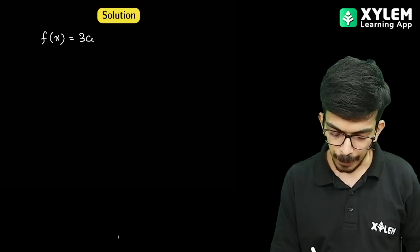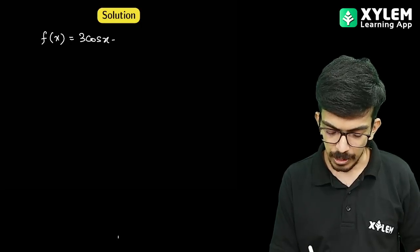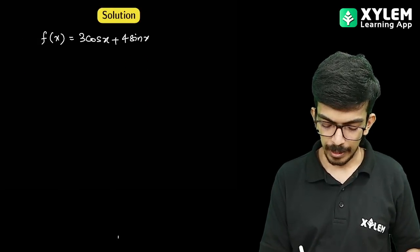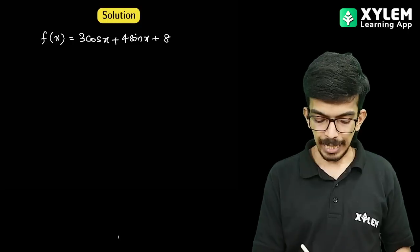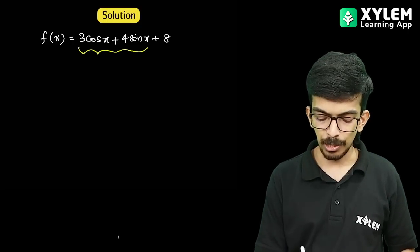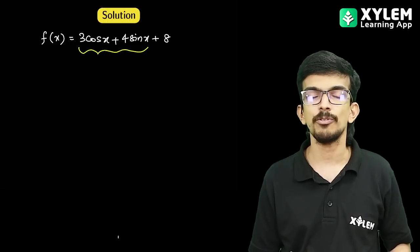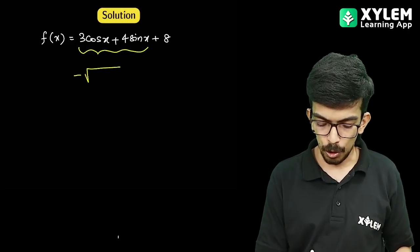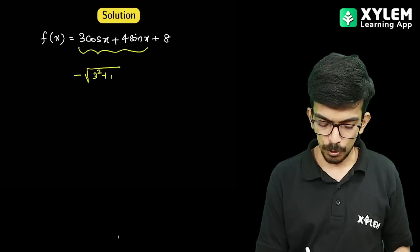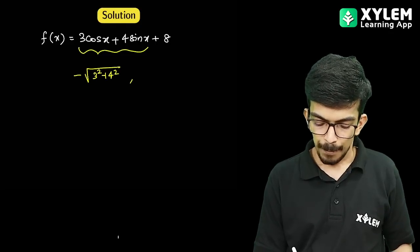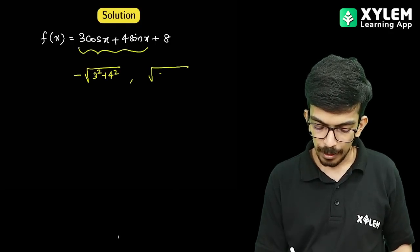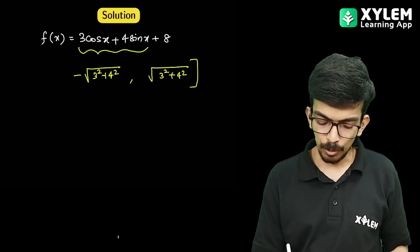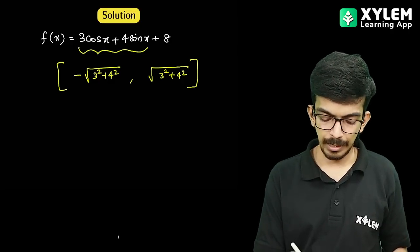3 cos x plus 4 sin x plus 8. The range of 3 cos x plus 4 sin x is minus root over 3 square plus 4 square to plus root over 3 square plus 4 square, which is minus 5 to 5. Adding 8, the range becomes 3 to 13. So the minimum value is 3.